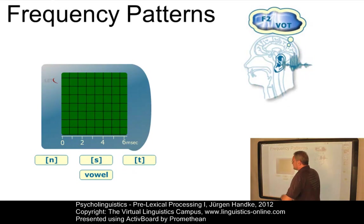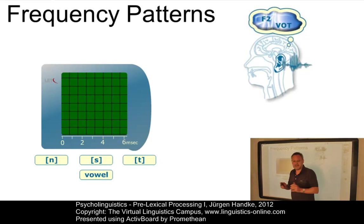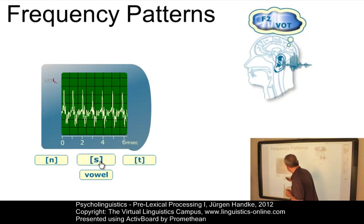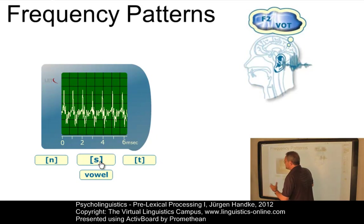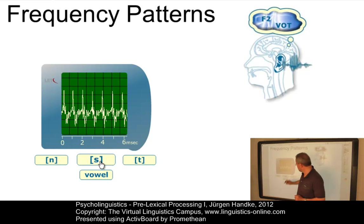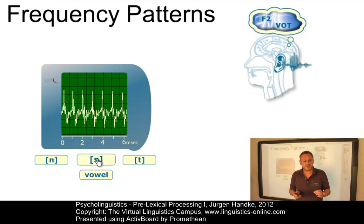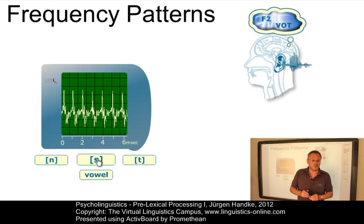Another cue that we rely on in speech perception is frequency patterns. The frequency of certain parts of the sound wave helps to identify a large number of speech sounds. Fricatives, for example, involve a partial closure which produces turbulence in the airflow, resulting in a noisy sound spreading over a broad frequency range. This friction noise is relatively unaffected by the context in which the fricative occurs and may thus serve as a nearly invariant cue for its identification.